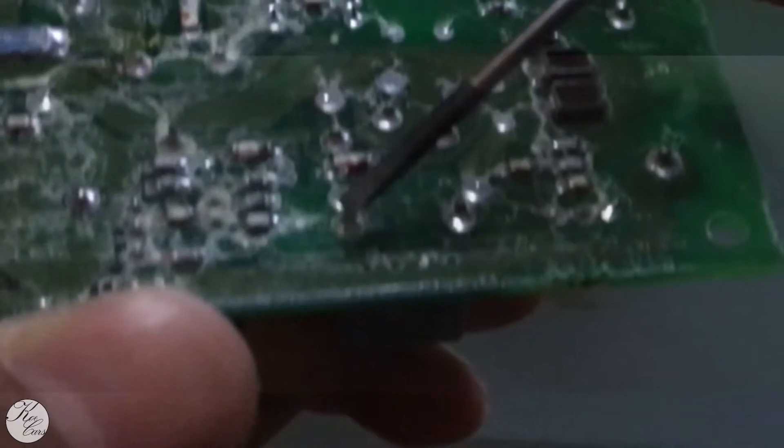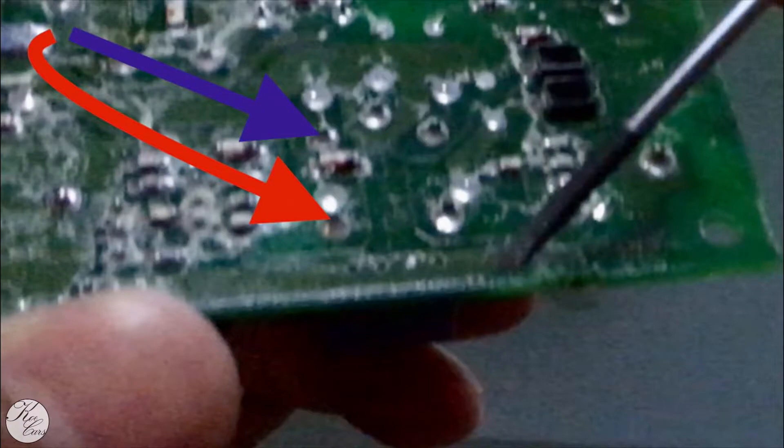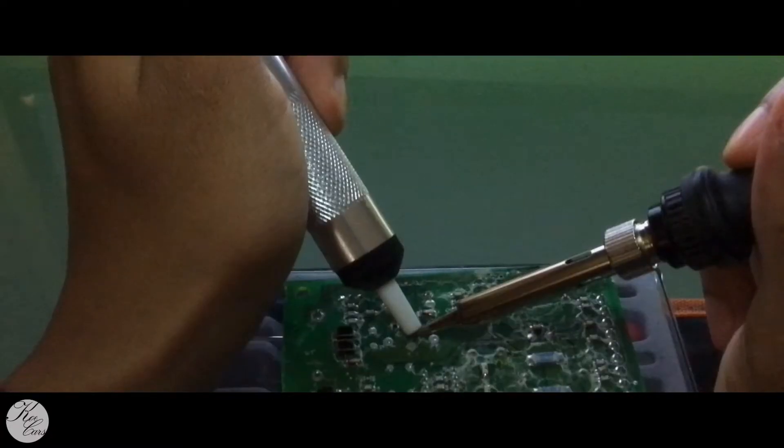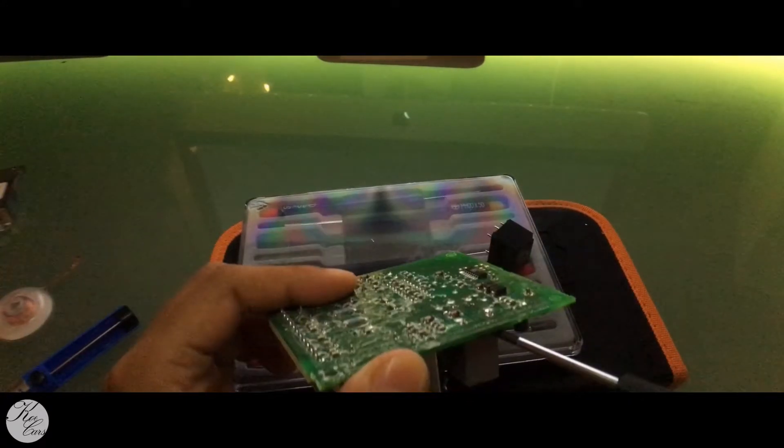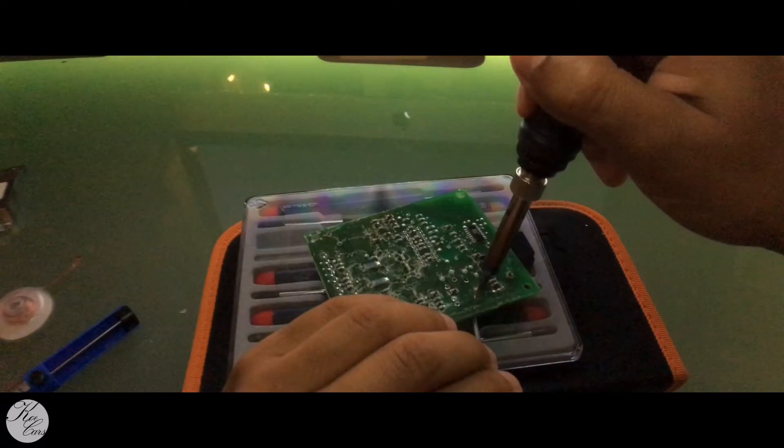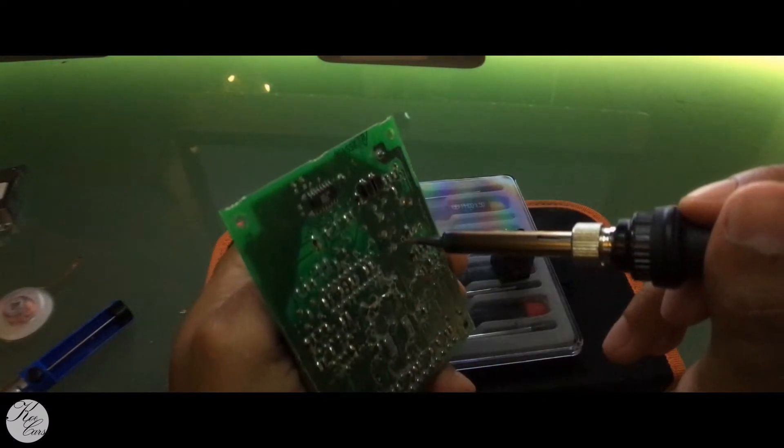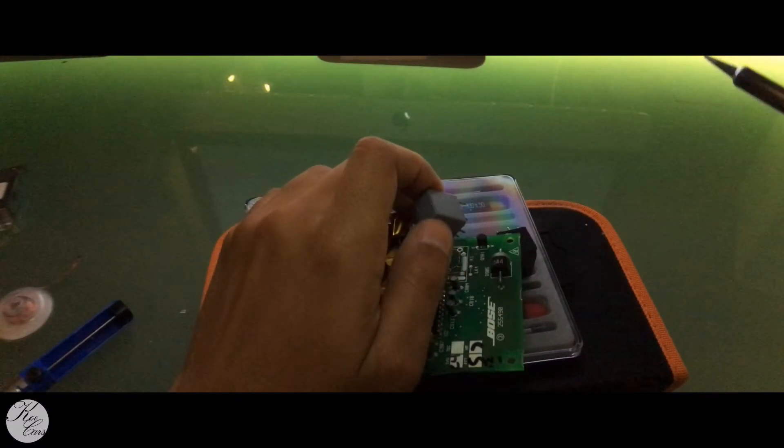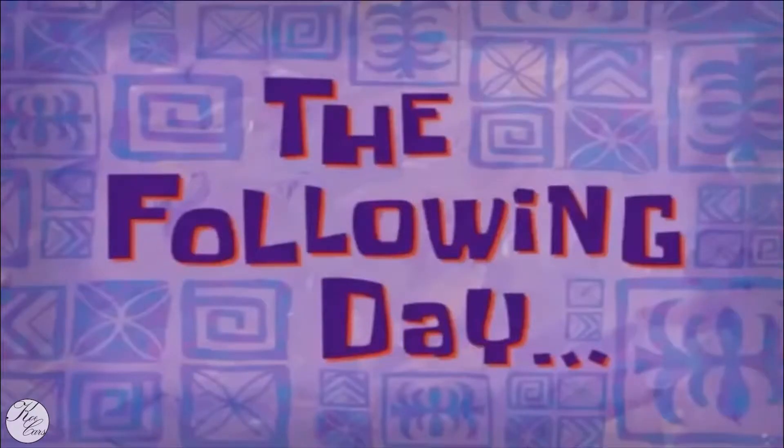Now you have one, two, three, four, five spots that you have to de-solder, un-solder, however. Take your time, suck it out. Your goal is to get all the old relay out. Now as you're doing this, just be gentle and try not to put too much heat into the board.